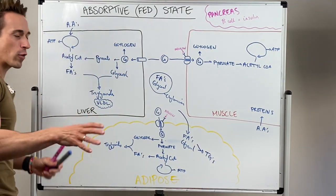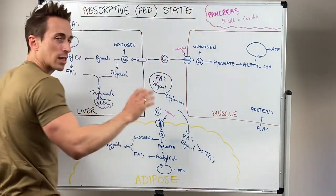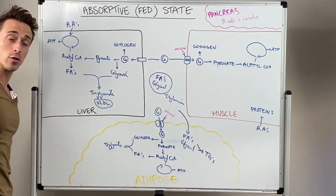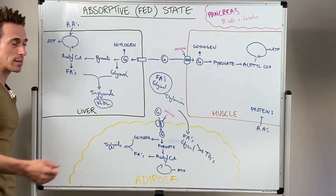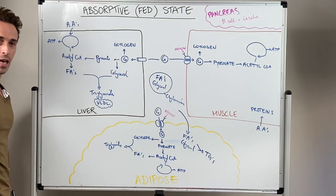And so what we've got here is a run through of what's happening in the fed state. It's all mediated by this insulin and mediated by high nutrient levels, predominantly high glucose levels, but also high levels of amino acids and high levels of broken down triglycerides in the form of fatty acids and glycerol.